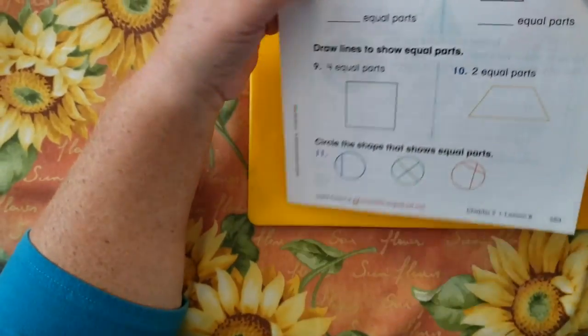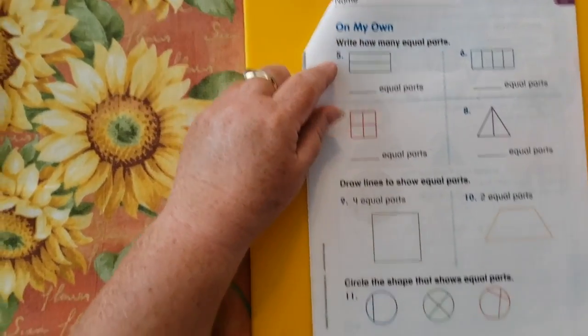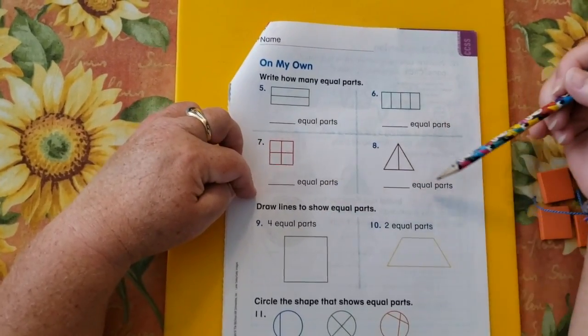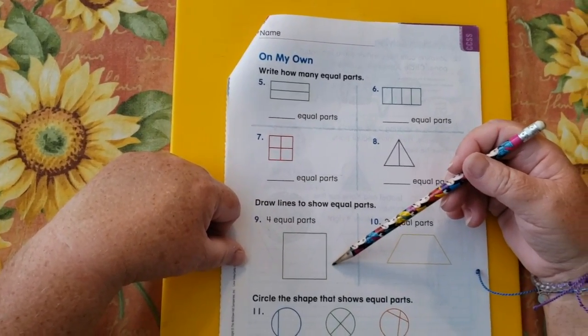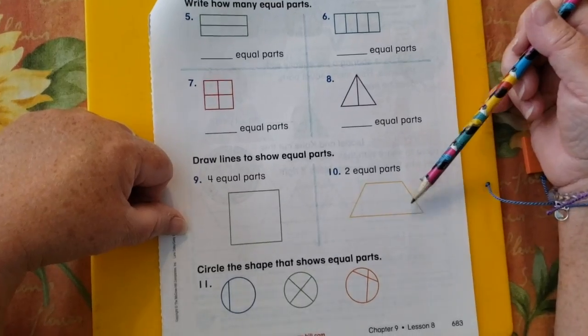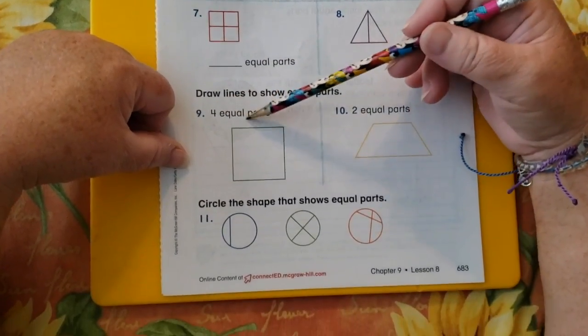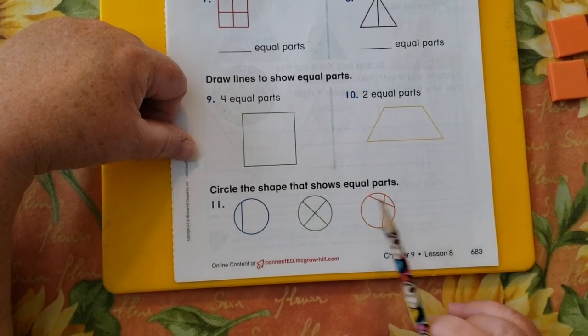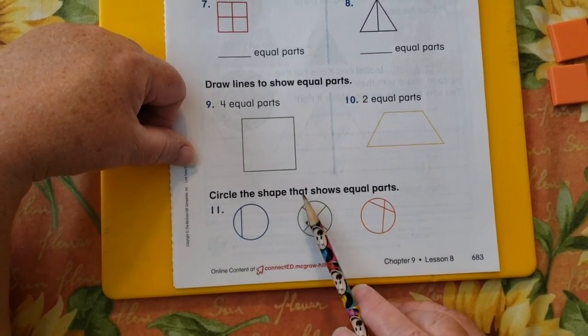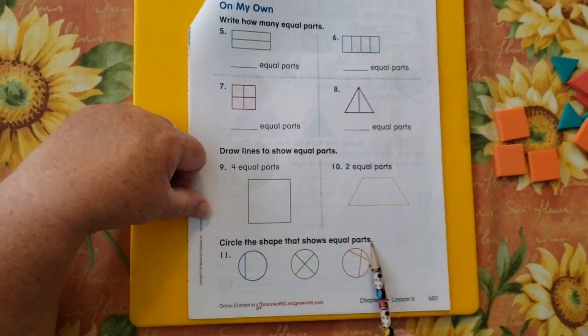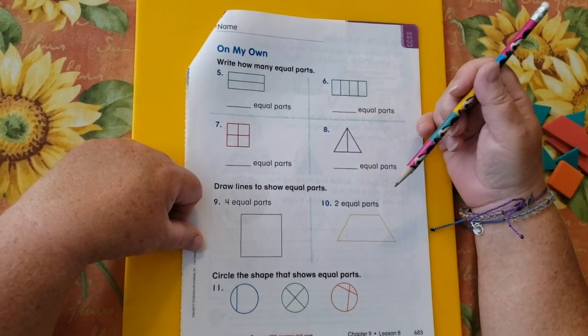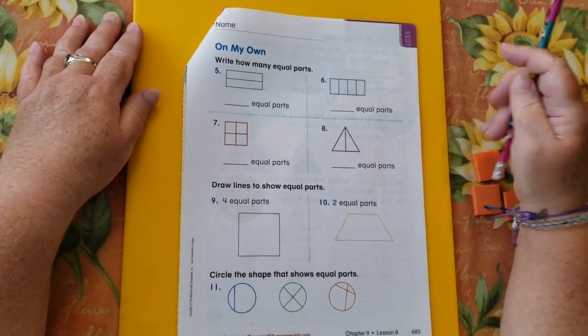Let's go to on my own. You're going to write how many equal parts. You're going to draw lines to show equal parts. Four here and two here. And then down at the bottom, you're going to circle the shape that shows equal parts. Only one of these is fair and square equal. Okay. Go ahead and do your work.